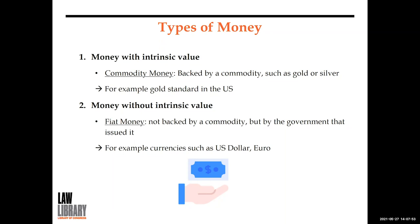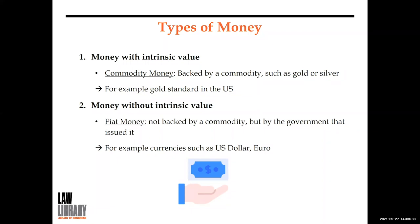Money without intrinsic value is called fiat money — from the Latin word meaning 'let it be done.' This is money that some authority, generally the government, has ordered to be accepted as a medium of exchange. It's not backed by a commodity but by the full faith and credit of the issuing authority. The US dollar, the euro, and other modern currencies are all fiat currencies. Currency is the coin and paper money of a country designated as legal tender, which circulates and is accepted as a medium of exchange in the country of issuance.